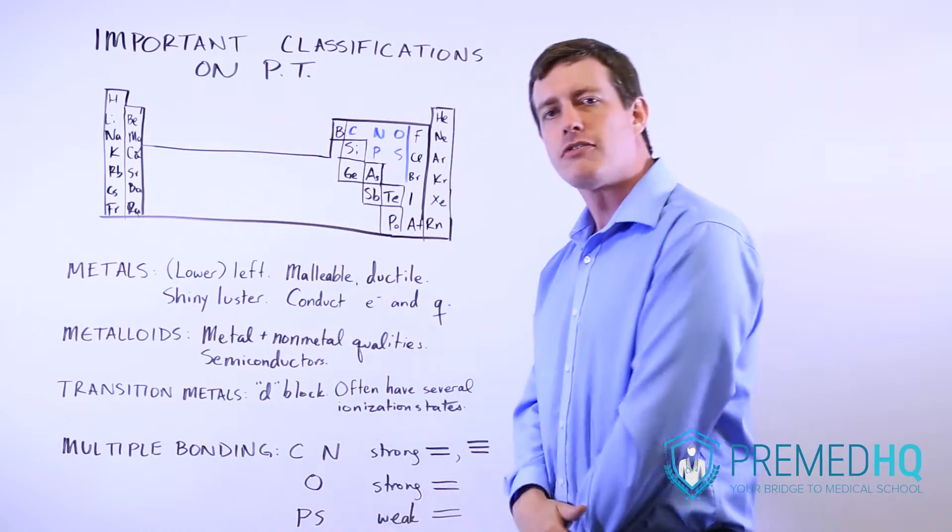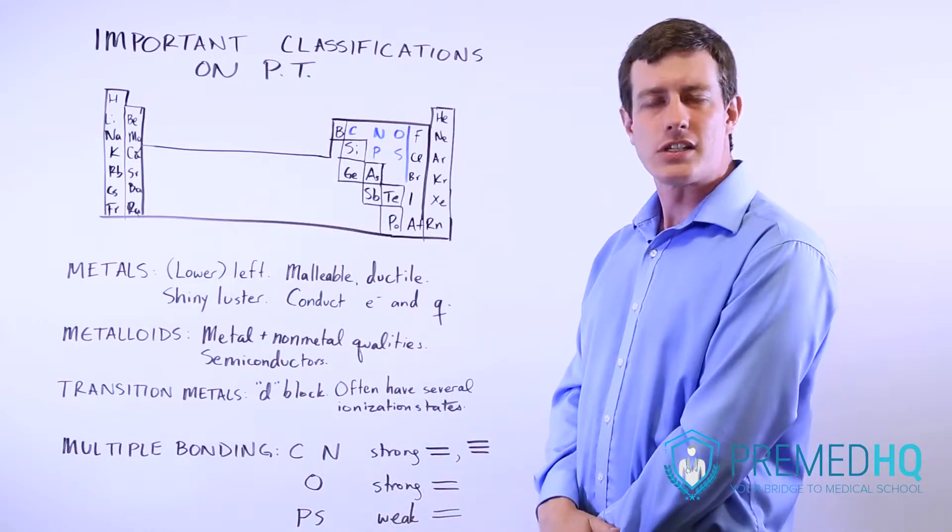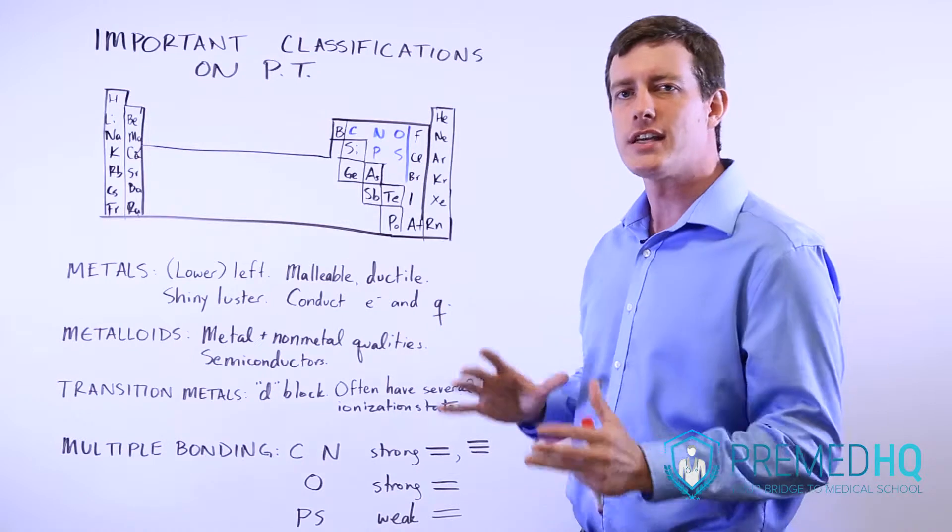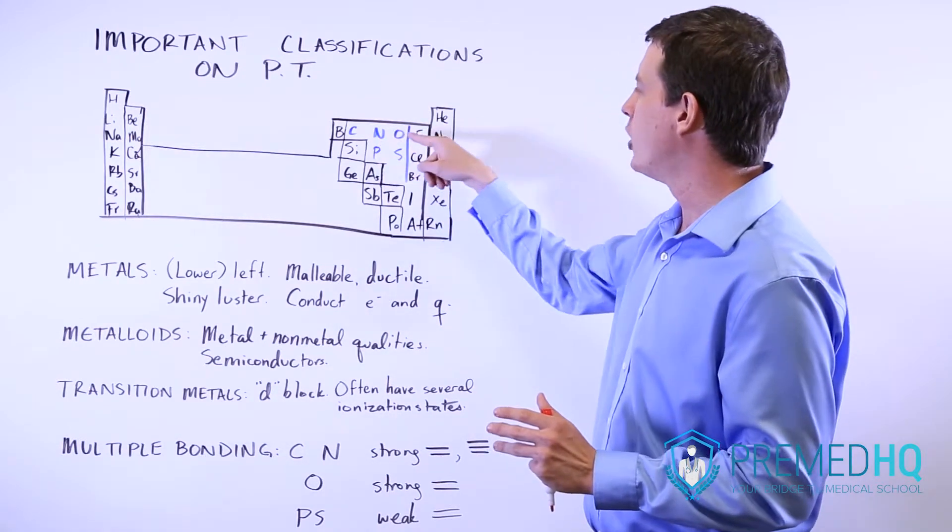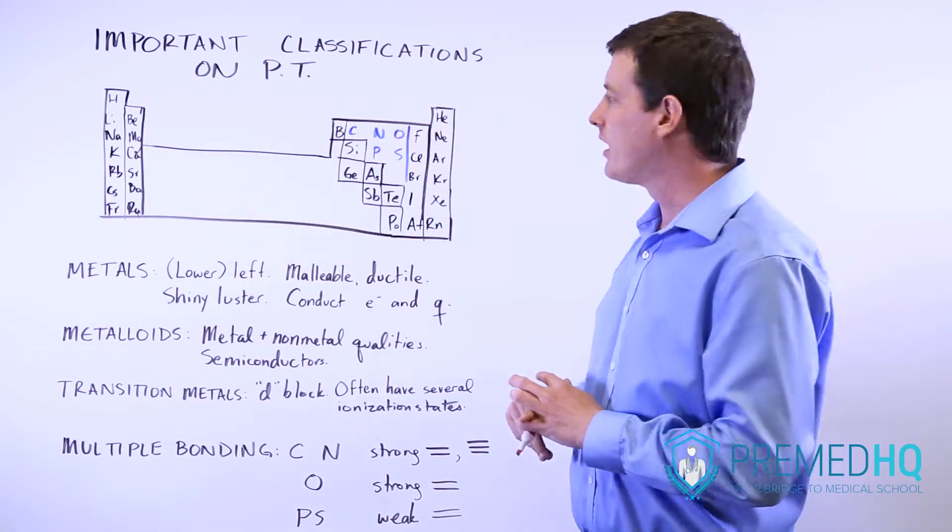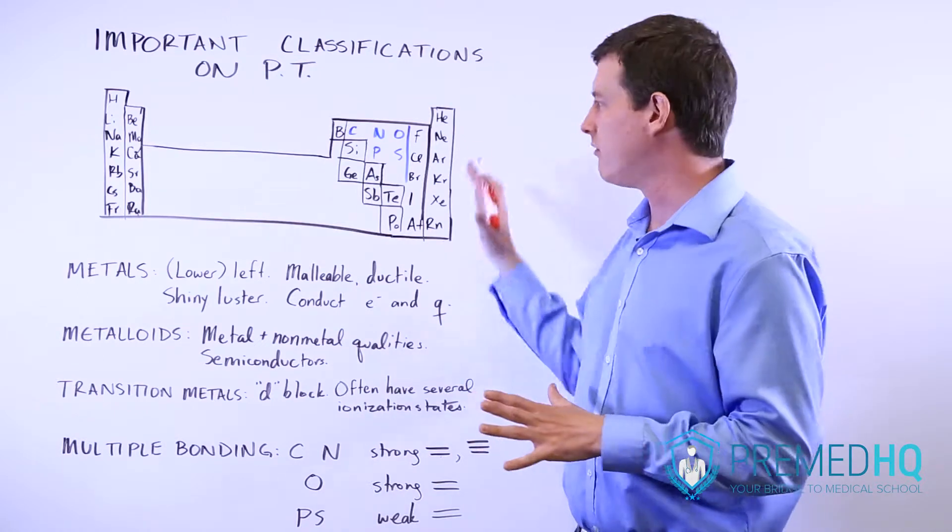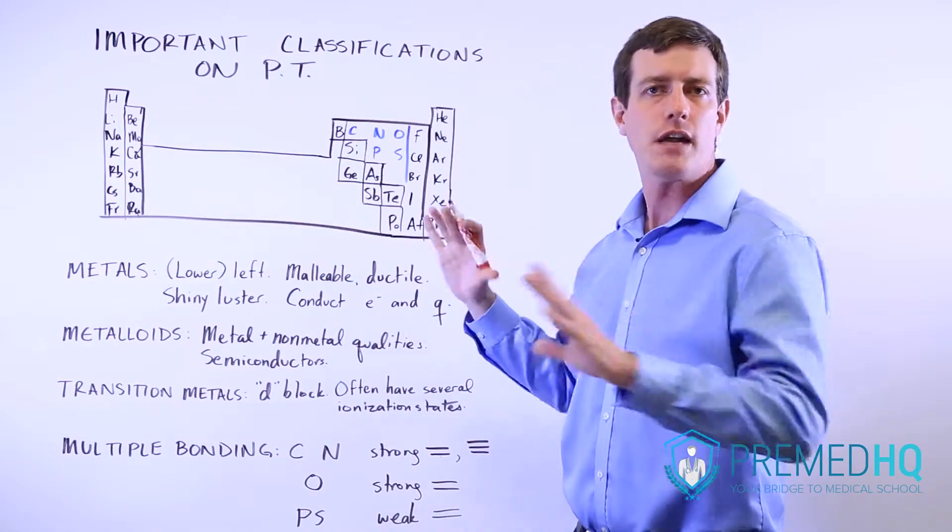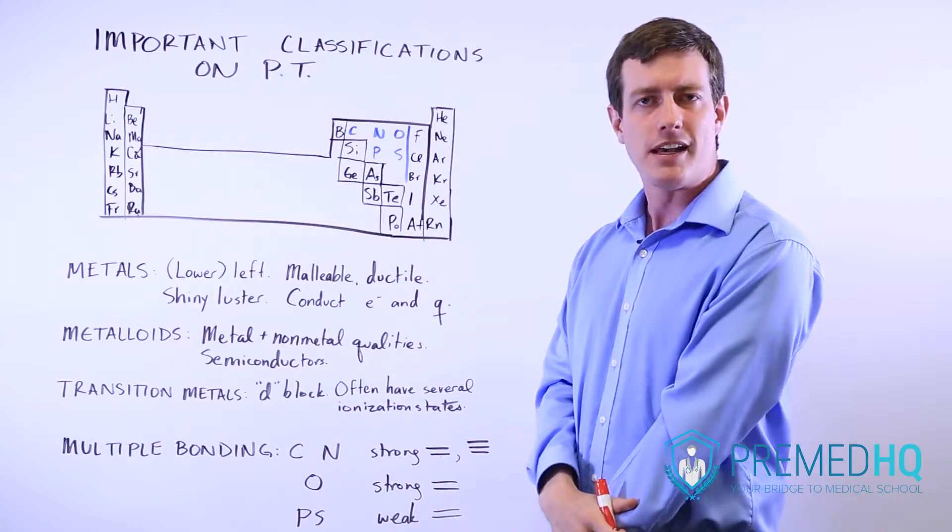Phosphorus and sulfur make weak double bonds, but they still are capable of multiple bonding. And so be aware that C, N, O, P, and S can all do multiple bonds, but very few other things are capable of even approaching a pi bonded state.